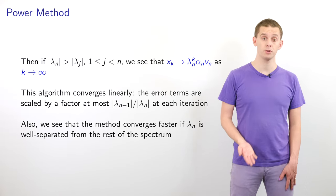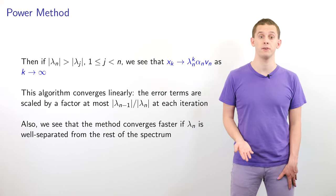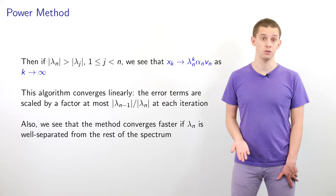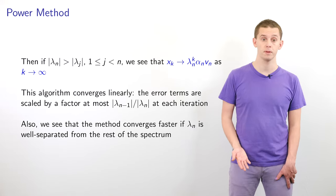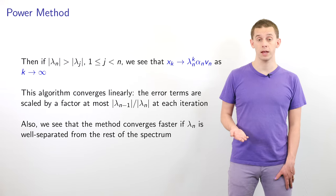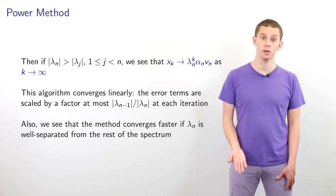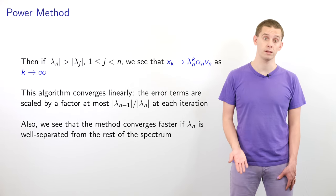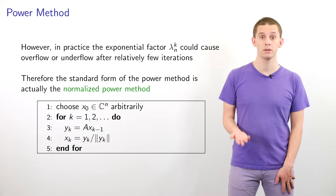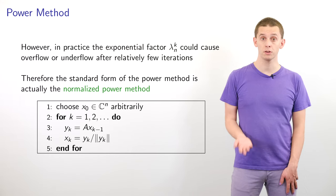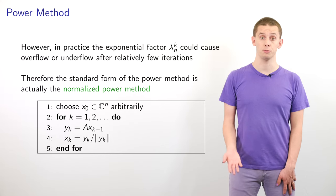The algorithm converges linearly, and the error terms are scaled by a factor of at most |lambda_{n-1} / lambda_n| each iteration. The algorithm converges faster if lambda_n is well separated from the rest of the eigenvalue spectrum. However, in practice, the exponential factor lambda_n^k may cause underflow or overflow in finite precision arithmetic after a number of iterations.